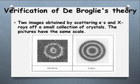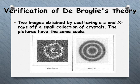Let's have a look here — two images. One has been produced through the diffraction or the scattering of electrons, the other with X-rays, off the same collection of crystals and pictures of the same scale. So what we can actually do is compare the distance between antinodes and use it to calculate our wavelength for the particles.